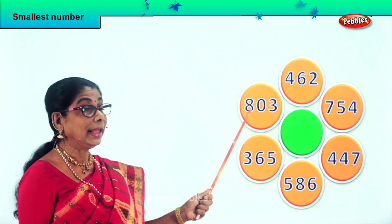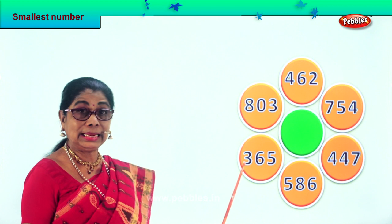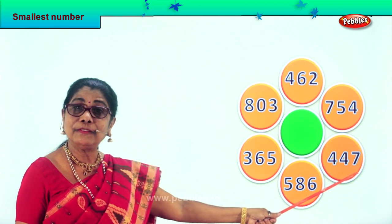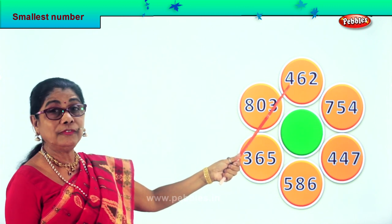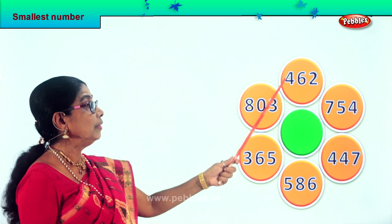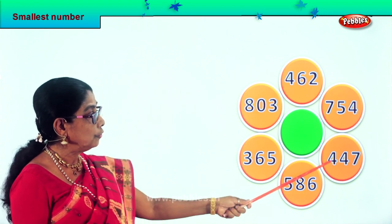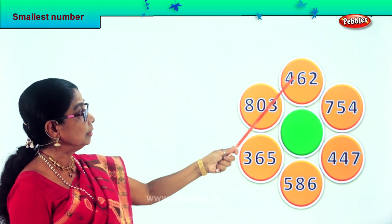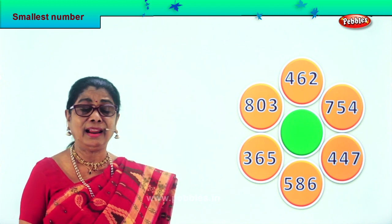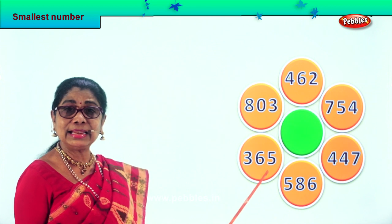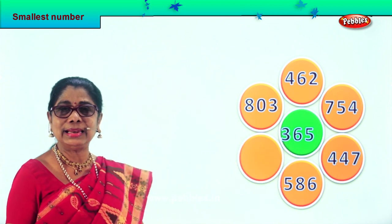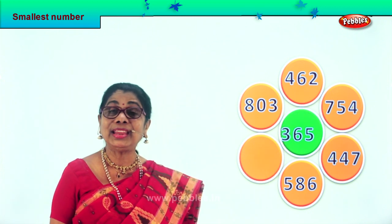Let's take another sum. Let's say the numbers aloud: eight hundred three, three hundred sixty-five, five hundred eighty-six, four hundred forty-seven, seven hundred fifty-four, and four hundred sixty-two. Let's look at all the hundreds places — four hundred, eight hundred, three hundred, five hundred, four hundred, seven hundred. Among these, three hundred is the smallest. So three hundred sixty-five is the smallest among these numbers. We take and put it in the middle — three hundred sixty-five.